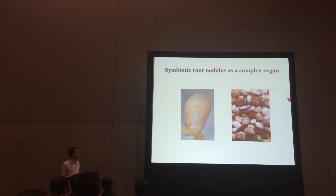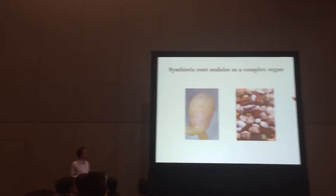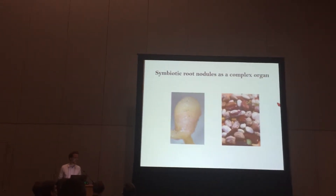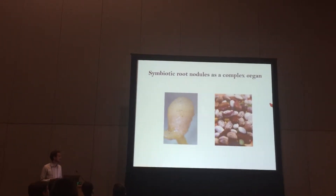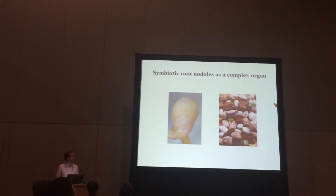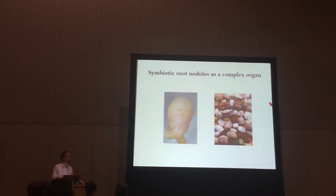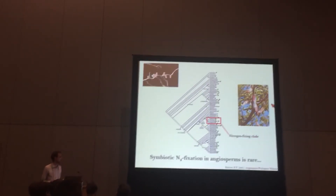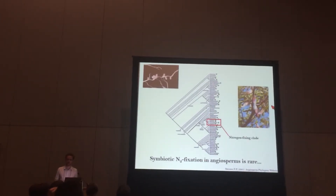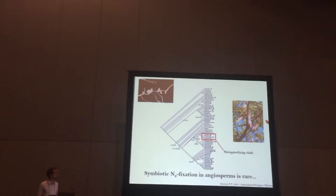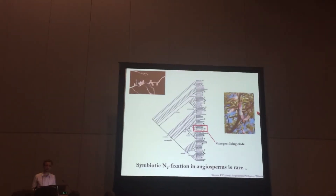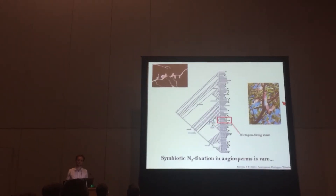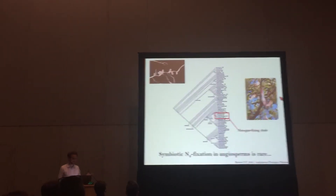Despite its simple look, the nodule is actually quite complex, because there are different zones with bacteria in different stages, signaling steps, and specialized tissue layers that exclude oxygen and transfer nutrients back and forth. All of that complexity is probably one of the reasons why, despite the potentially enormous benefit of being liberated from soil nitrogen limitations, this mutualism is in fact quite rare — rare from a taxonomic perspective.